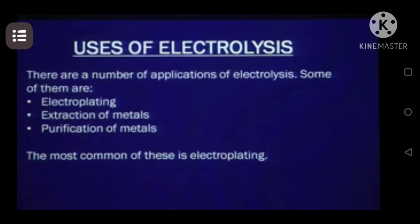Today we will study the uses or applications of electrolysis. Electrolysis is used in industries to produce useful materials from naturally available substances — for example, sodium metal is manufactured by electrolysis of molten sodium chloride. Electrolysis is also used in the process of electroplating, which is coating a thin layer of a metal on another metal. It is also used for purification of metal, a process known as electro refining.